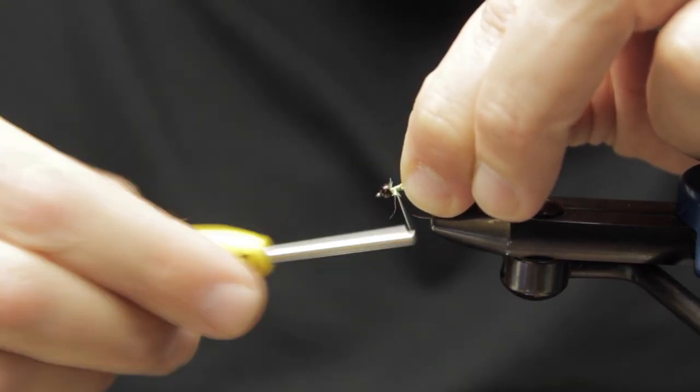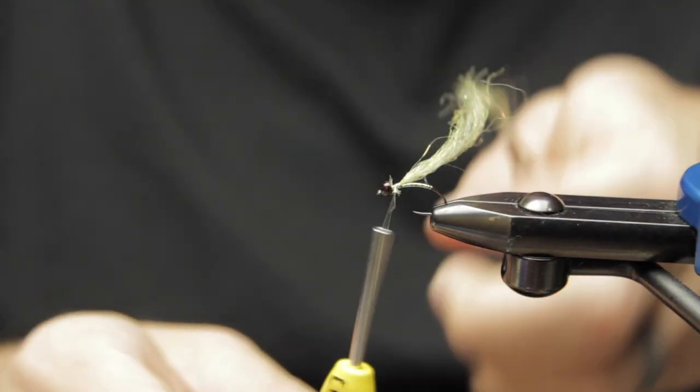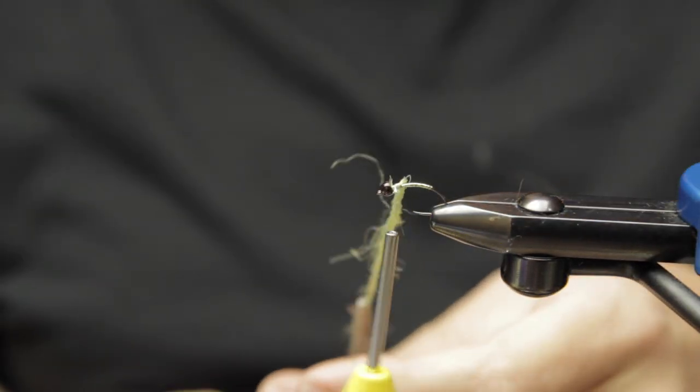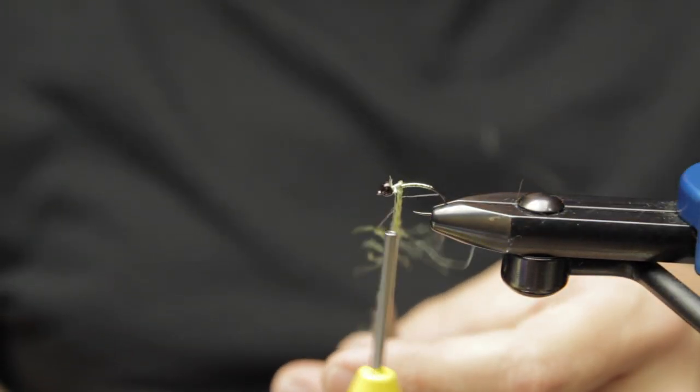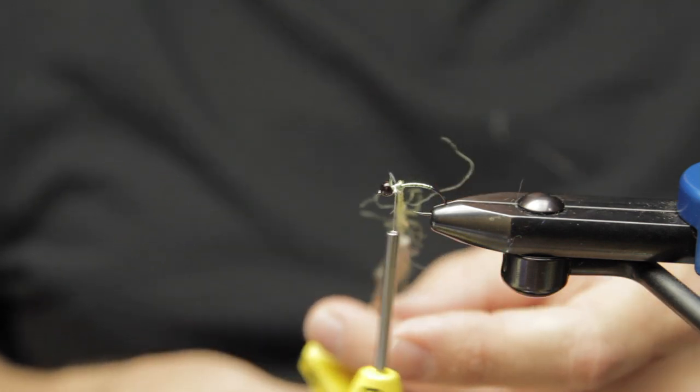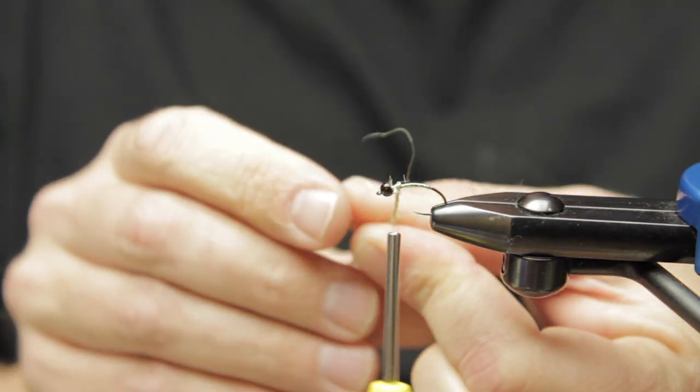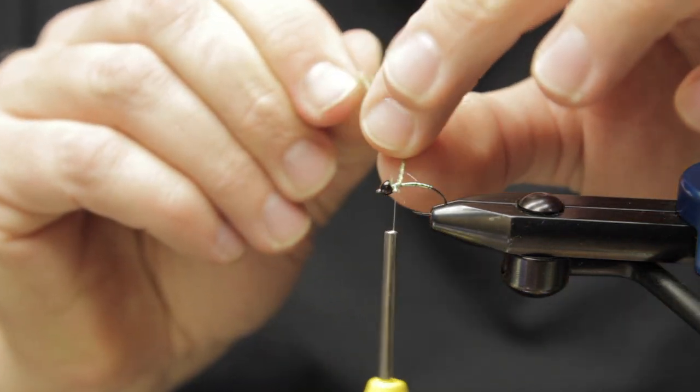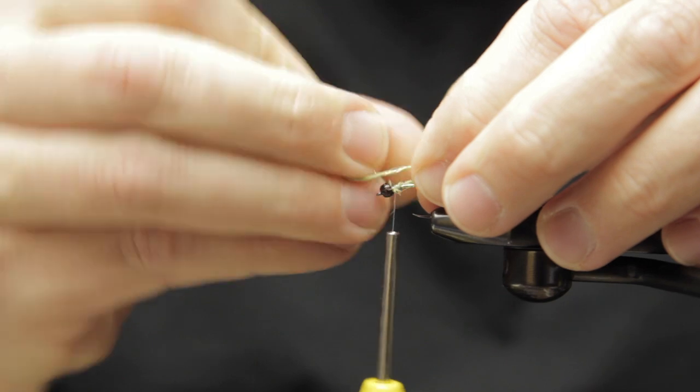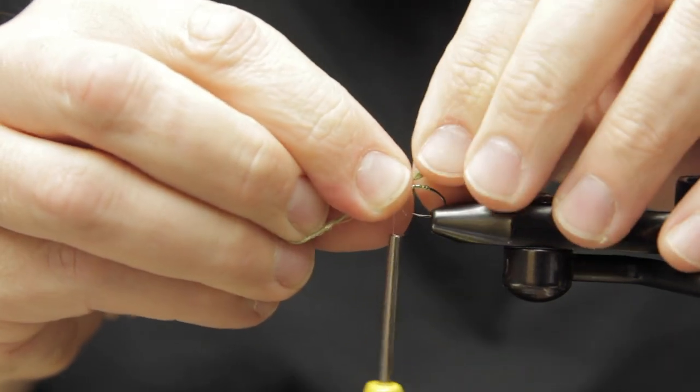So what I'll do is I just start twisting and you can see there's frayed sections all over the place. For this, I'm using the complex twist section of our dubbing spinner.